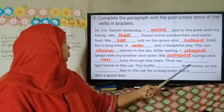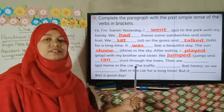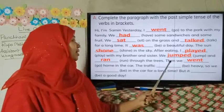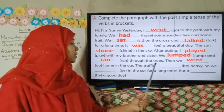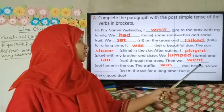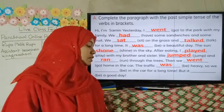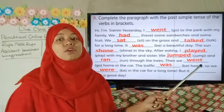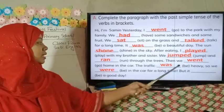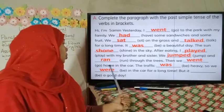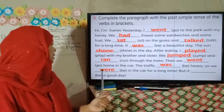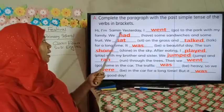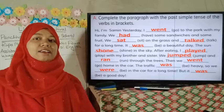'Then we [go] home in the car.' We already know go becomes 'went', so: 'We went home in the car.' 'The traffic [be] heavy.' Traffic was heavy. 'So we [be] in the car for a long time.' Here the subject is 'we', so we use 'were', not 'was'. So: 'We were in the car for a long time.' And: 'But it [be] a good day' — it was a good day. Dear students, I have completed the paragraph with the appropriate past tense words.